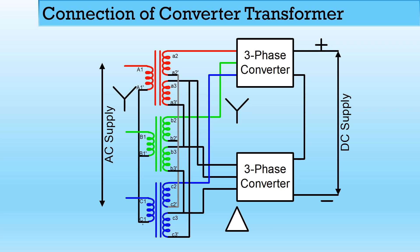A2 dash, B2 dash, and C2 dash are connected together to form a star connection. From A2, B2, and C2, one output is taken and connected to a three-phase converter — so the second winding (suffix 2) forms a star connection. The third winding (suffix 3) is connected in delta: A3 dash is connected to B3, B3 dash is connected to C3, and C3 dash is connected to A3. Output is taken from A3, B3, and C3 and fed to a second three-phase converter. The advantage of the delta connection is that zero sequence current is trapped, so triplen harmonics are automatically reduced to zero.